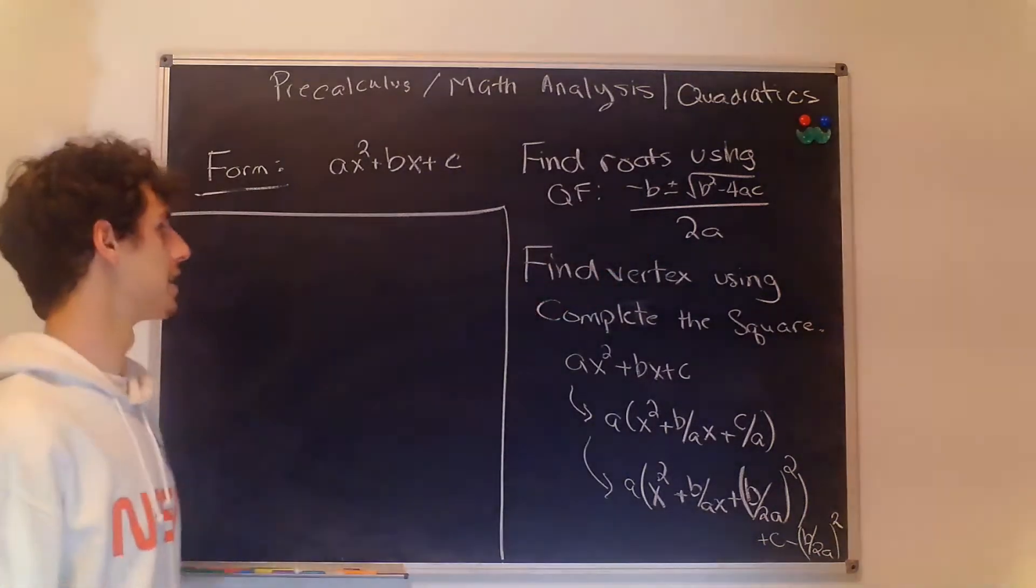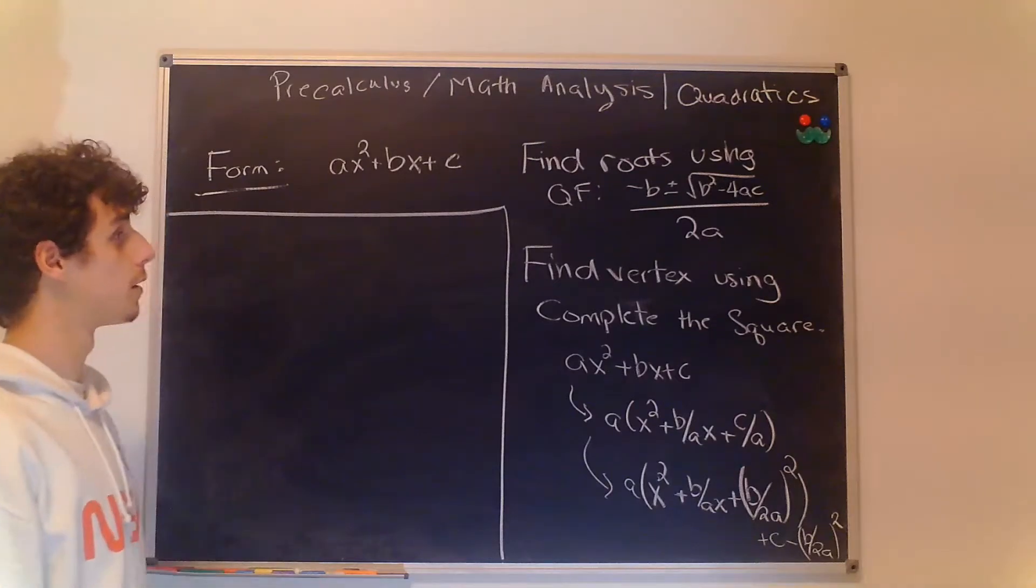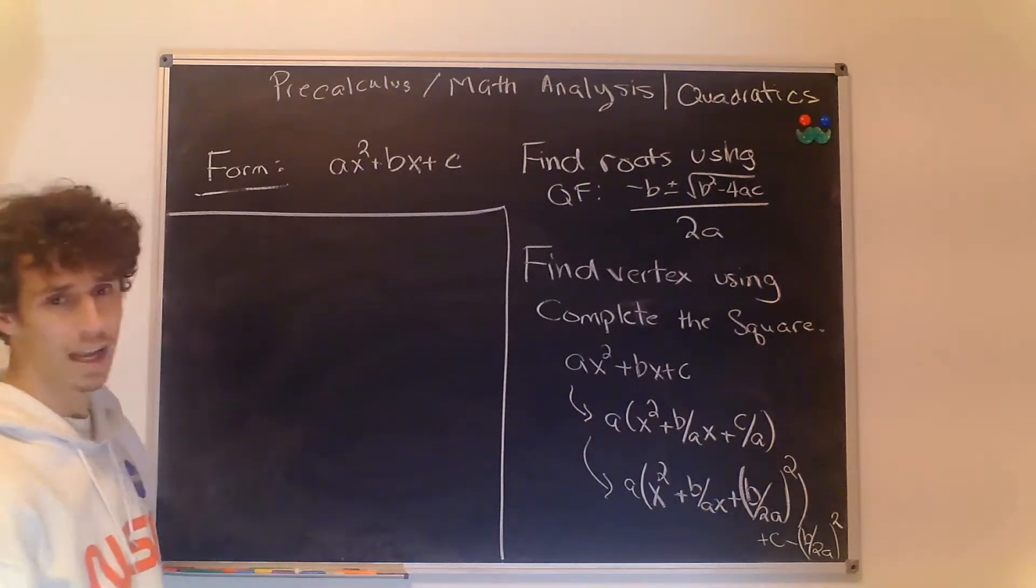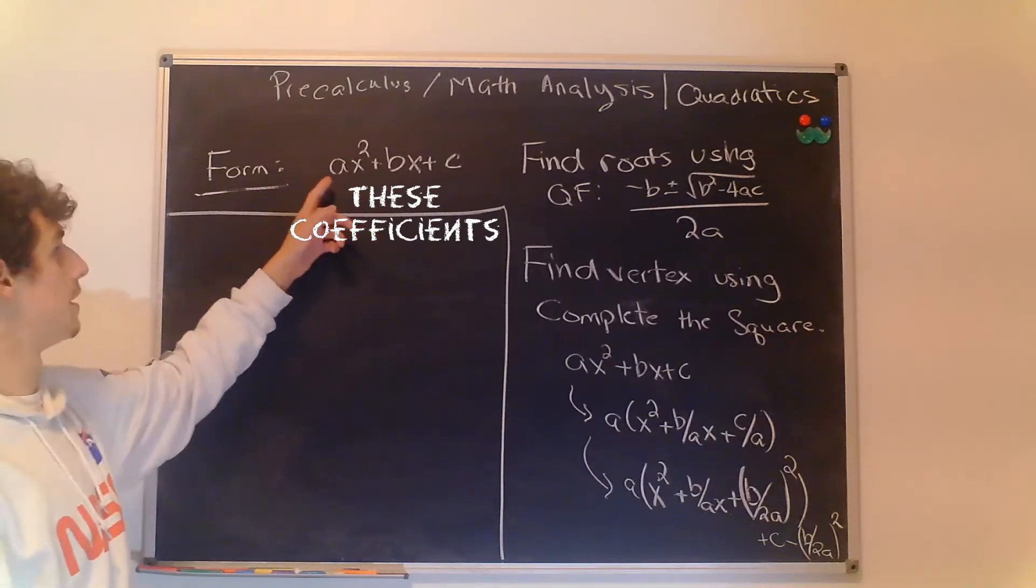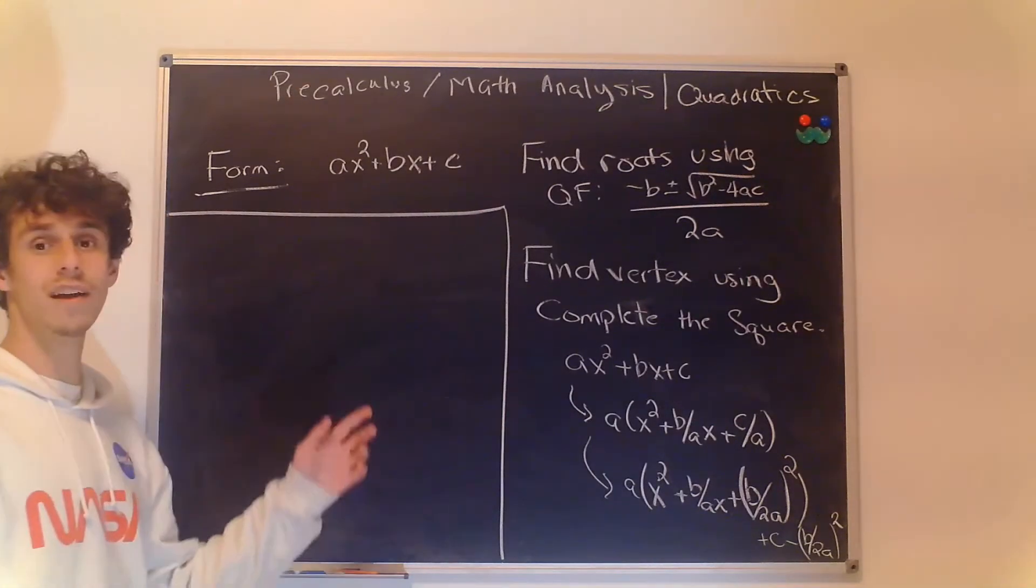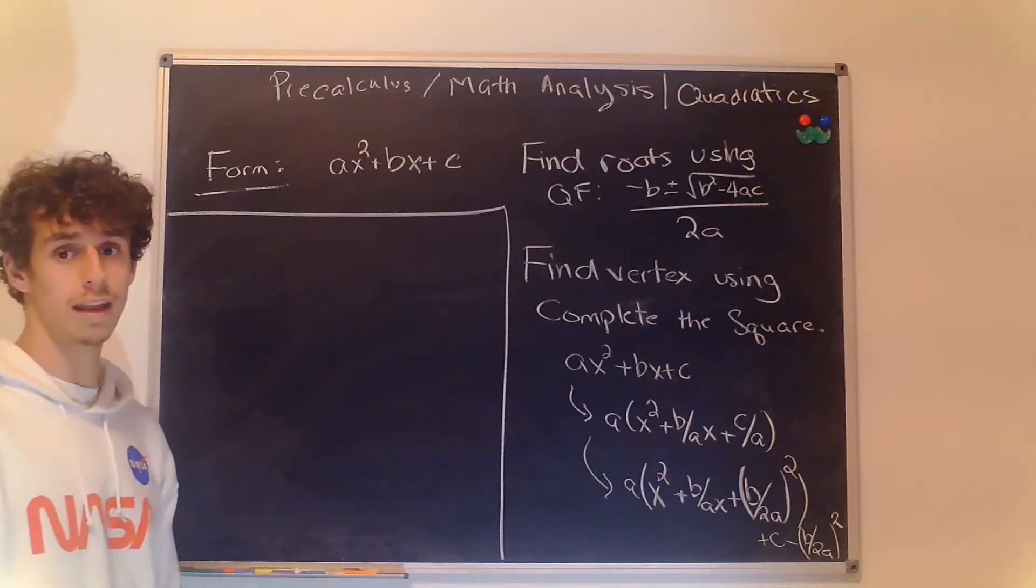That's given as -b ± √(b² - 4ac) / 2a where a, b and c are these a's, b's and c's listed here. You'd also find the vertex of a quadratic which is the point of the parabola that is formed when you graph out these functions.